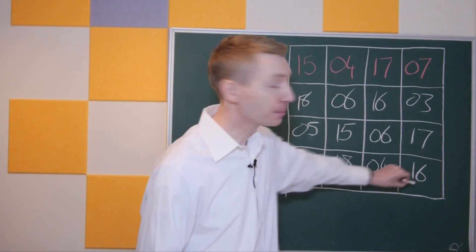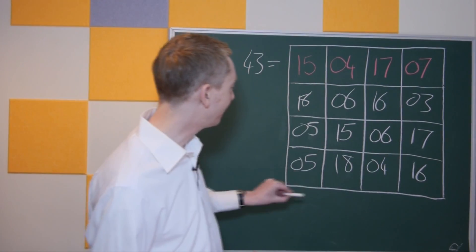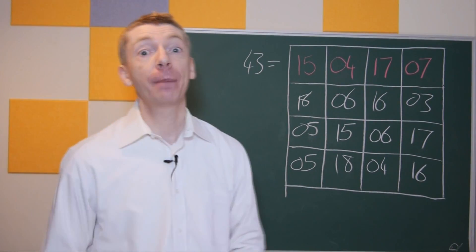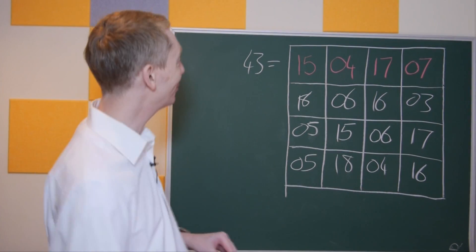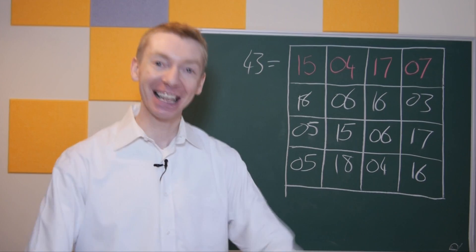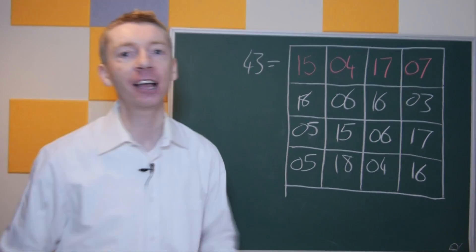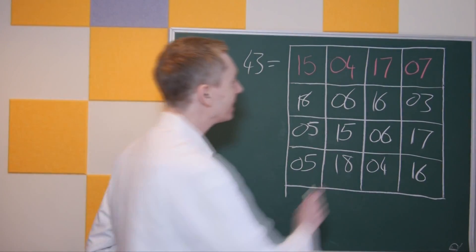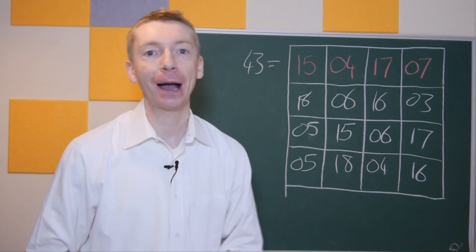The diagonals should add up to the magic number too. So 15 plus 6 plus 6 plus 16 should add up to 43. And the other diagonal — 7, 16, 15, and 5 — should all add up to 43. As an extra treat, I actually designed this so that the four corners add up to the magic number too: 15 plus 7 plus 16 plus 5 equals 43. The four numbers in the center — 6, 16, the other 6, and 15 — also add up to 43. And the four numbers in the top left, top right, bottom left, and bottom right quadrants each add up to that birthday magic number.